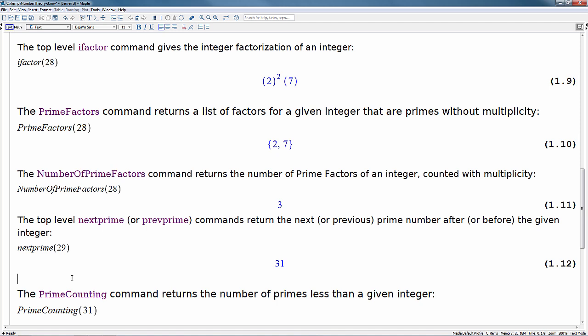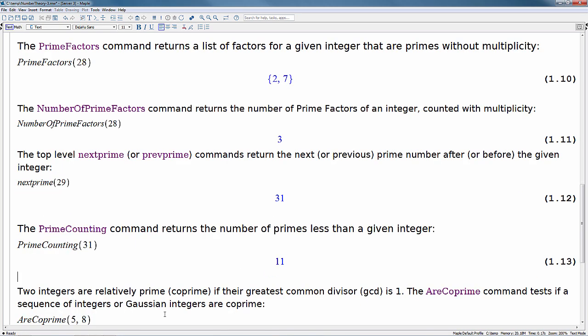Now an interesting command is the prime counting command. This returns the number of primes less than a given integer. So prime counting command returns that there are 11 primes previous to 31.